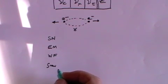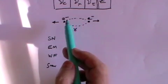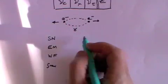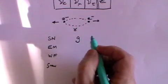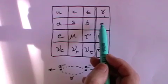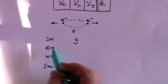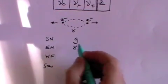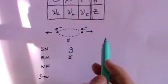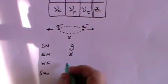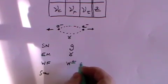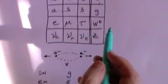Now the gauge bosons responsible for exchanging information are these. For the strong nuclear, it's the gluon. For the electromagnetic force, it's the photon. For the weak force, it's actually the W plus and minus and the Z.